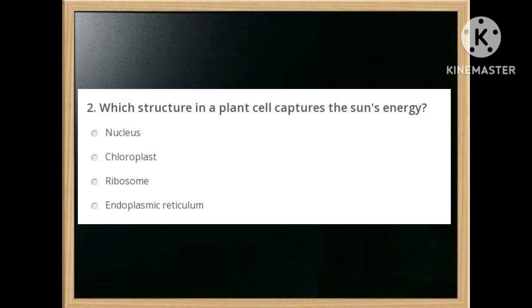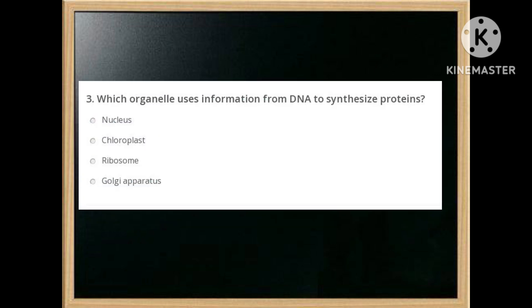Which structure in a plant cell captures the sun's energy? Options are: nucleus, chloroplast, ribosome, endoplasmic reticulum. The answer is: chloroplast.